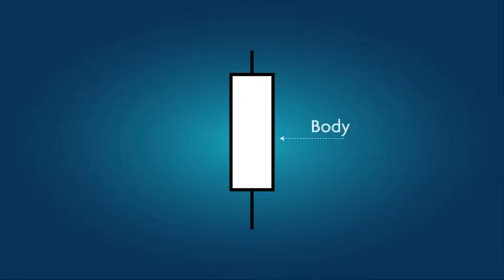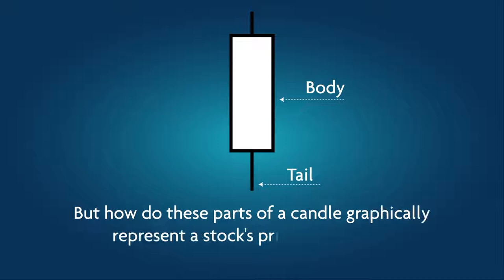In part 1 of this video, you learned that all Japanese candlesticks have a body and that most candlesticks also have tails. But how do these parts of a candle graphically represent a stock's price movement?